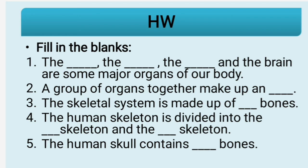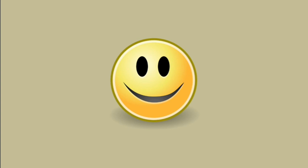That was all for today. Here is some homework — fill in the blanks: 1) The dash, dash, dash, and brain are some major organs of our body. 2) A group of organs together make up a dash. 3) The skeletal system is made up of dash bones. 4) The human skeleton is divided into the dash skeleton and the dash skeleton. 5) The human skull contains dash bones. Thanks for attending this session. Next time we will continue with new topics from the skeletal system. See you next session — take care, bye-bye.